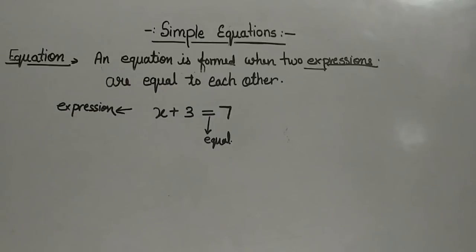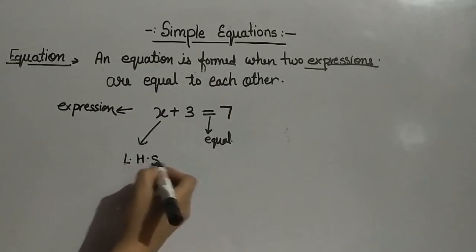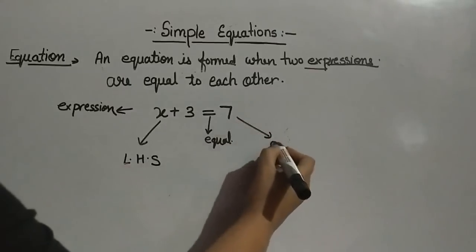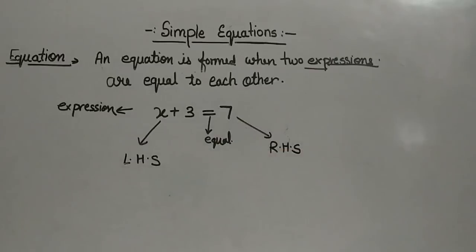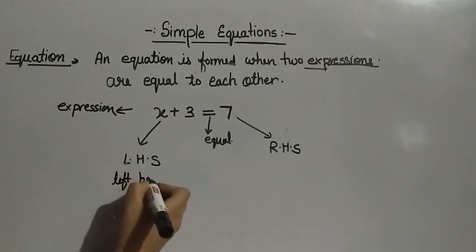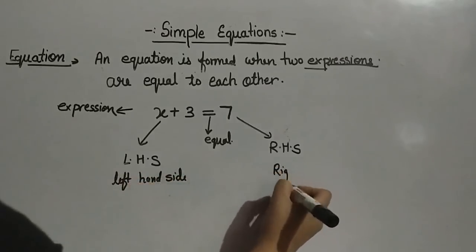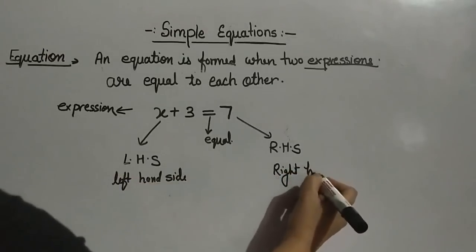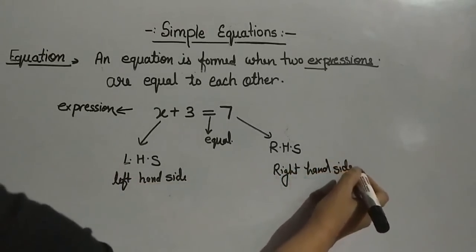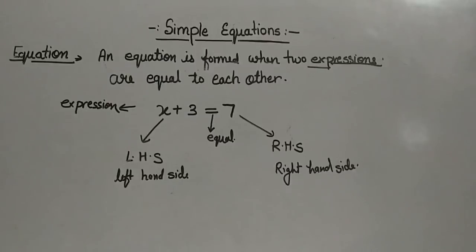An equation always has two sides and these two sides are equal. This side is called LHS and the next side is called RHS. LHS means left hand side and the other side is right hand side. The equation tells us that two quantities are the same.